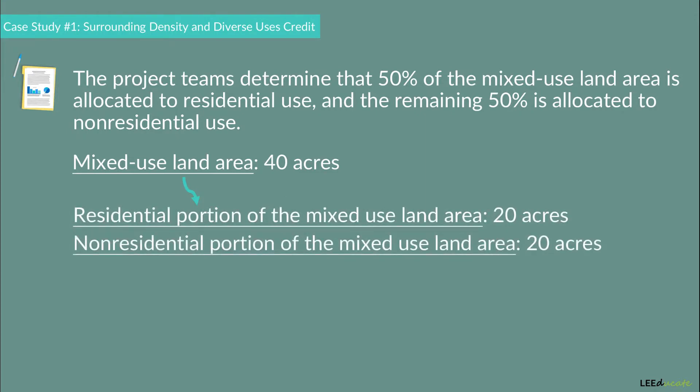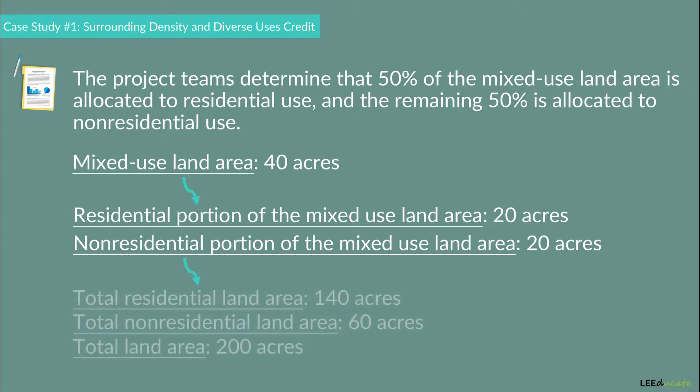The residential portion of the mixed-use land area equals 20 acres, and the non-residential portion of the mixed-use land area equals 20 acres. The project team then calculates the total residential and non-residential area: total residential area equals 140 acres, and total non-residential area equals 60 acres.